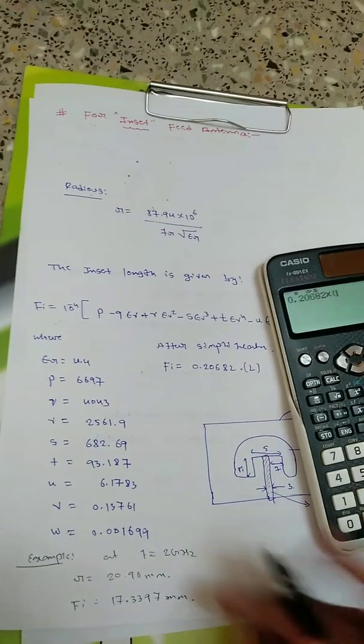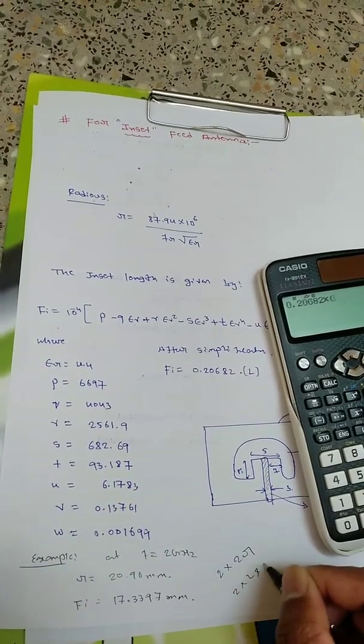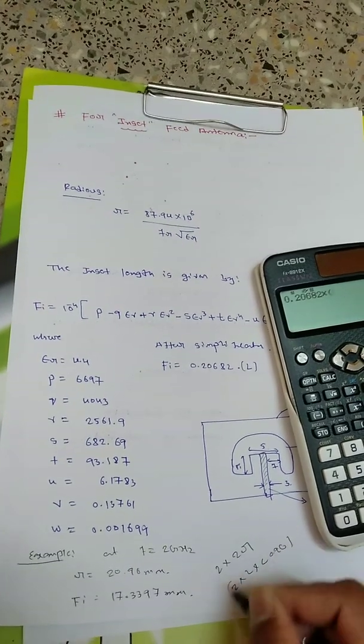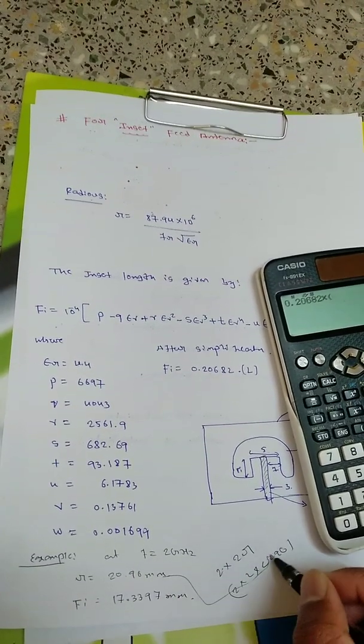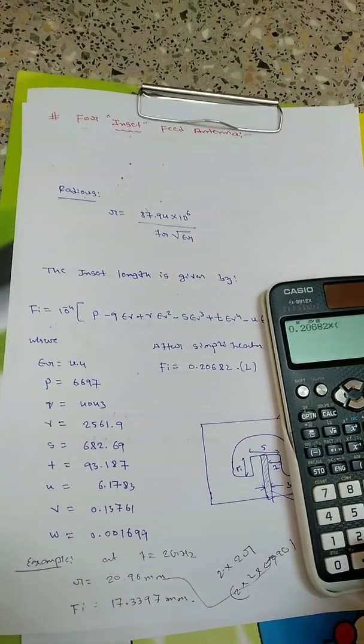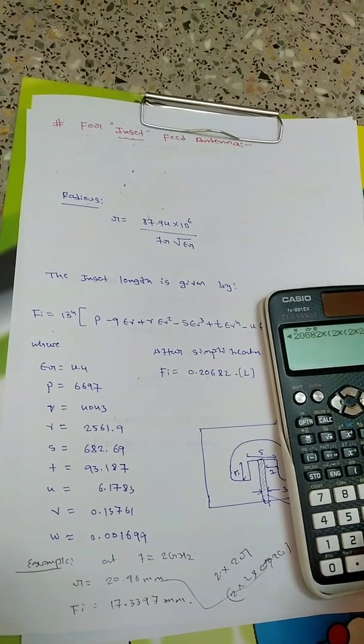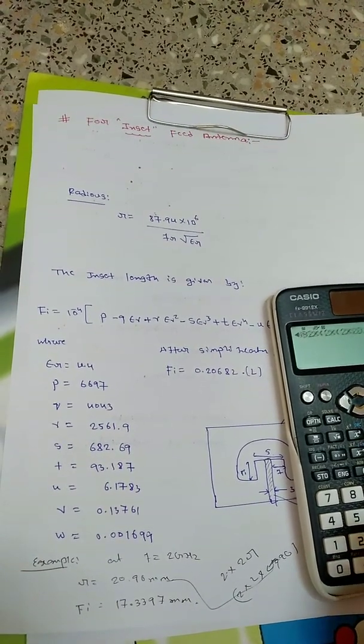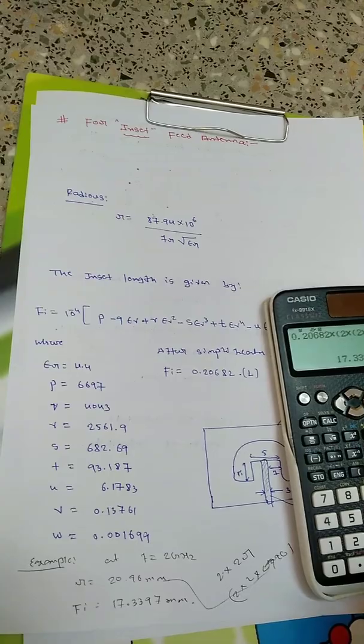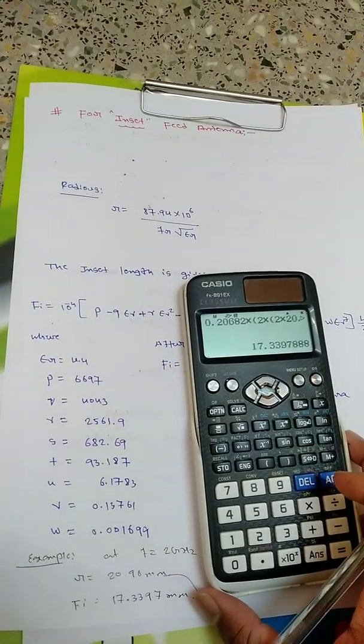0.20682 times length. Length is 2 x 2r. So 2 x 2 x 20.96. Radius is 20.96. I need to multiply by length here: 2 x 2 x 20.96. I will close the brackets. How much will I be getting?